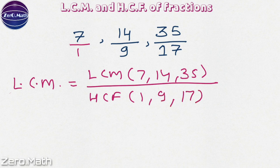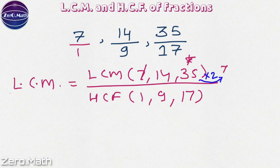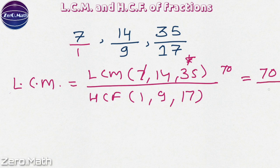To figure out the LCM of the numerators, let us find out which is the highest number — that is 35. Check whether 35 is completely divisible by 7. Yes, so cancel it out. Whether 35 is completely divisible by 14? No. So what we will do? We will double 35 to get 70. Check whether 70 is completely divisible by 14? Yes. So the LCM would be 70. Now let us figure out the HCF of the denominators. The HCF is going to be 1, because the lowest number here is 1, and 1 is definitely a factor of each number. So in such a case, we can straight away write down the HCF as 1. Hence, the LCM of the given fractions is 70 over 1.